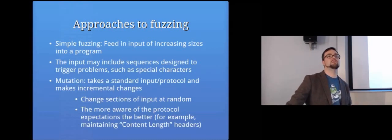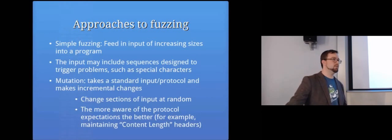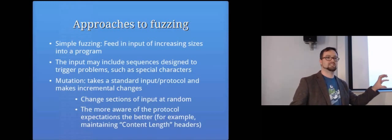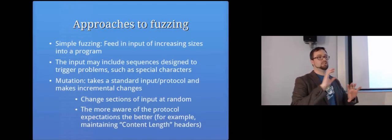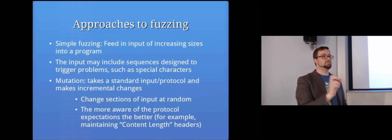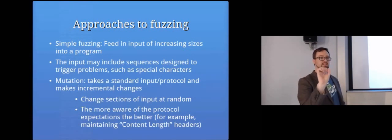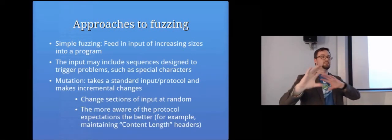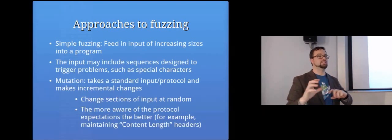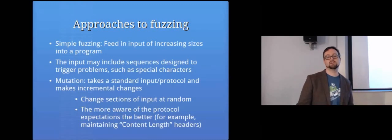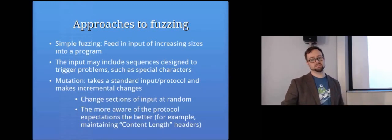But another thing we might try is mutation based attacks. So for example, I might see, okay, FTP usually looks like this. So I'm going to take that as the standard template of what normally happens, and we're going to just change things a little bit. So instead of sending the command make directory, maybe I'll try make... I'll just change it a little bit and change it a bit more, and maybe make that a bit longer. So it's a mutation based thing, because that's more likely to hit kinds of programming mistakes rather than just sending completely random stuff. We'll change sections of the input at random.